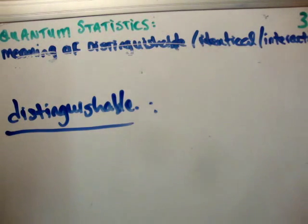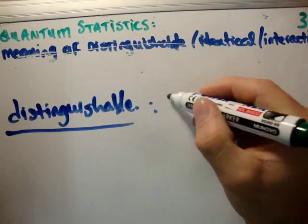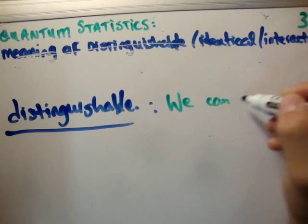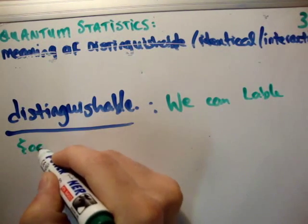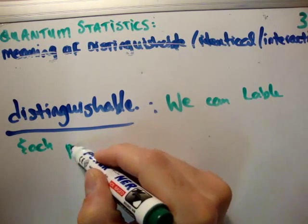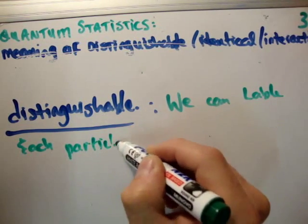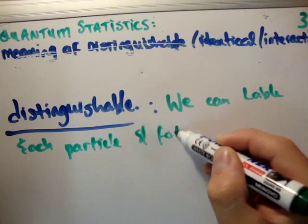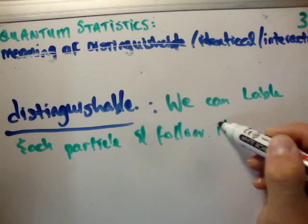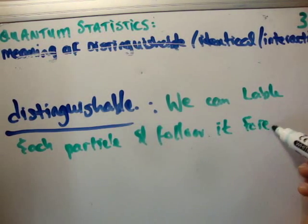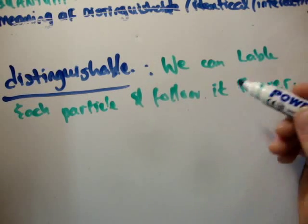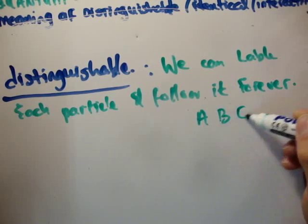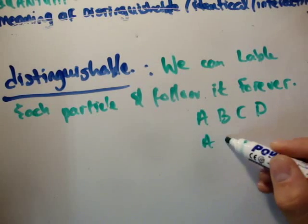So let's first of all discuss what does distinguishable mean. It means exactly what it says on the tin. It means that we can label each particle and follow it forever. So we can always say, well, that's particle A, or that's particle B, or whatever. So let's say A, B, C, D. Well, they are distinguishable.